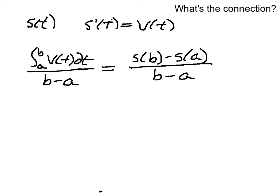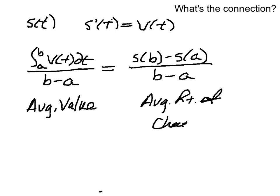And if you take a look at that, the average velocity, remember, is going to have the units of velocity, and the average rate of change is also going to have the units of the velocity. So this is a connection between average value on this side and average rate of change on this side, which takes a long time to relate.